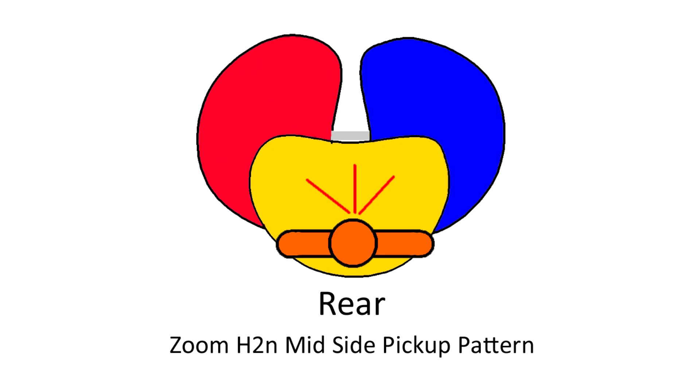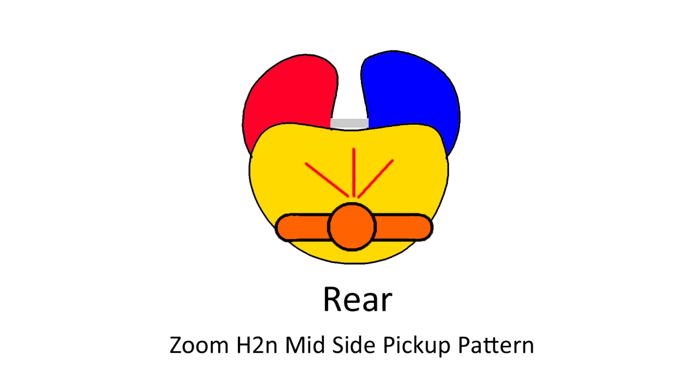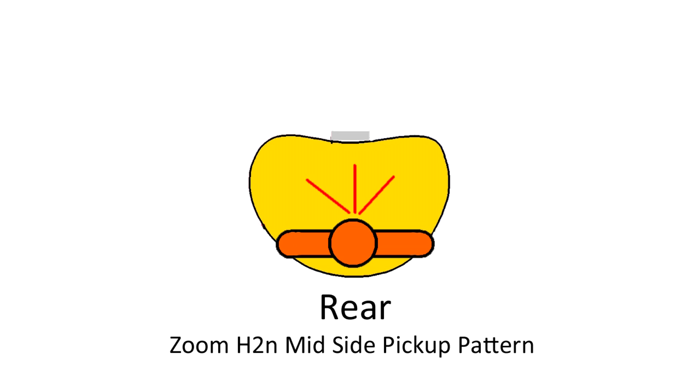The middle microphone is dedicated to the source while the side microphones pick up ambient or surrounding sounds. The sensitivity on the side microphones can be lowered on the H2N to record more from the middle and less from the side microphones.